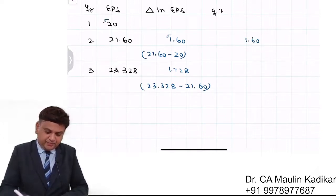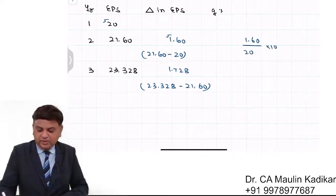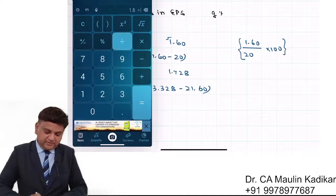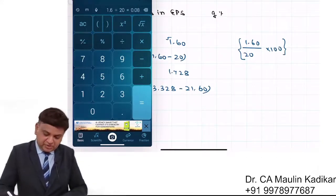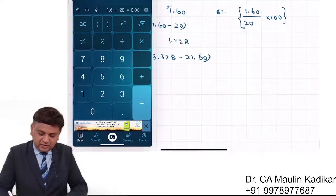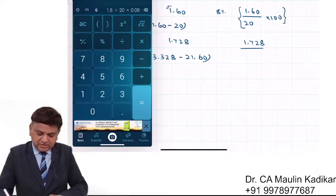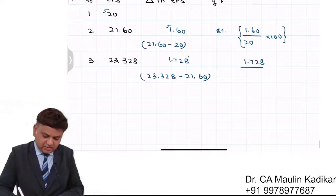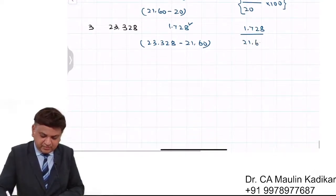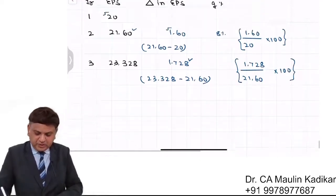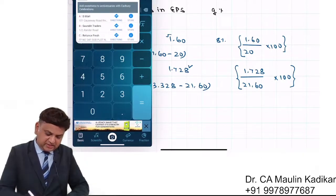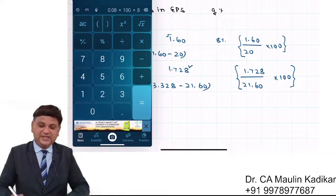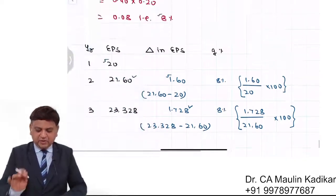As far as the growth rate is concerned: 1.6 increase in earning over 20, so 1.6 ÷ 20 × 100 gives exactly 8%. For the next year, 1.728 is the increase over 21.6, so 1.728 ÷ 21.6 × 100 is once again 8%. This is how you can cross-verify the values.